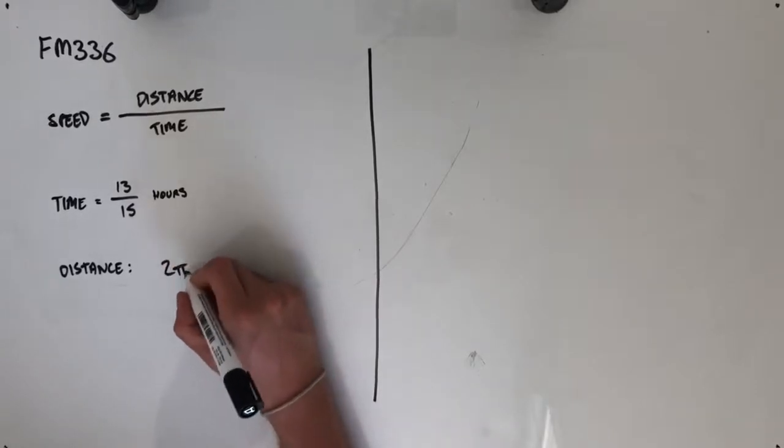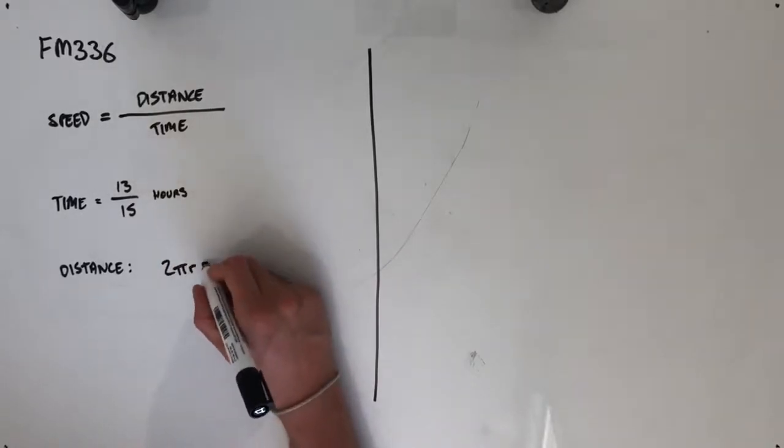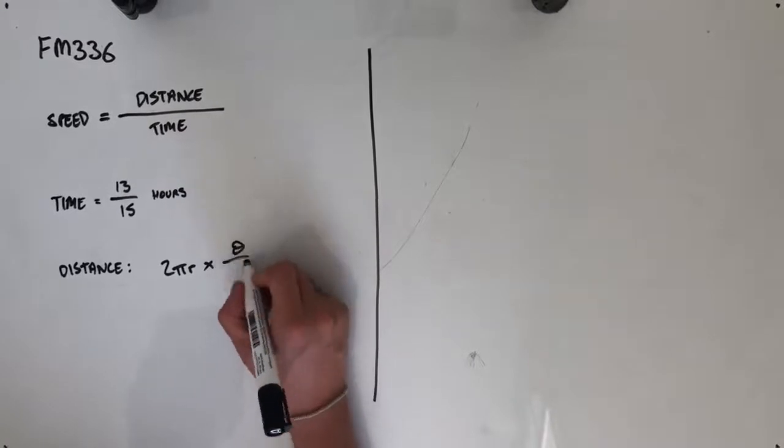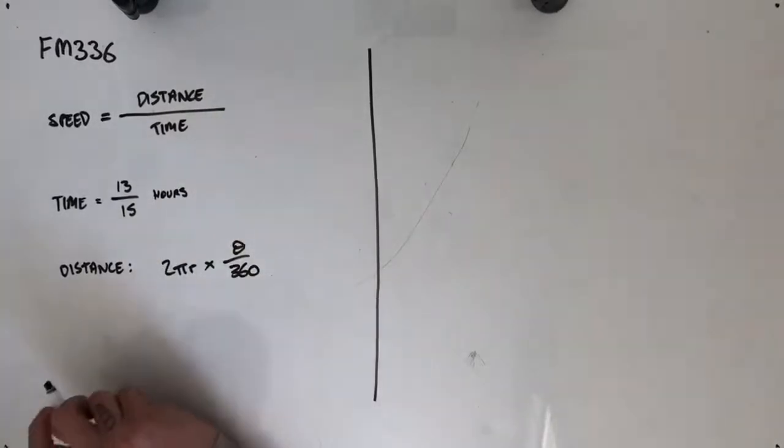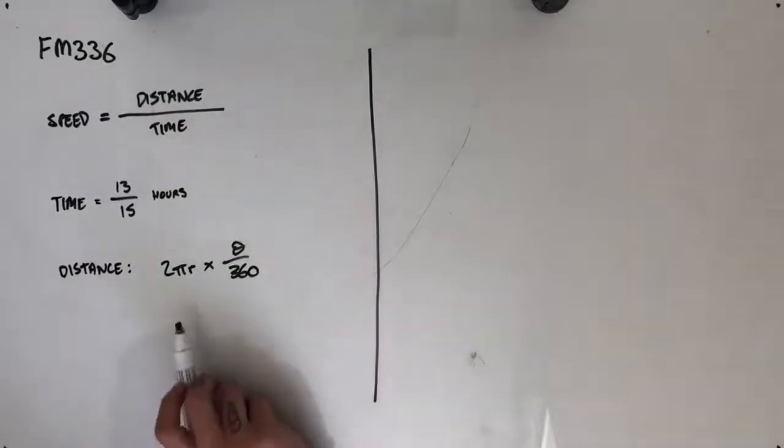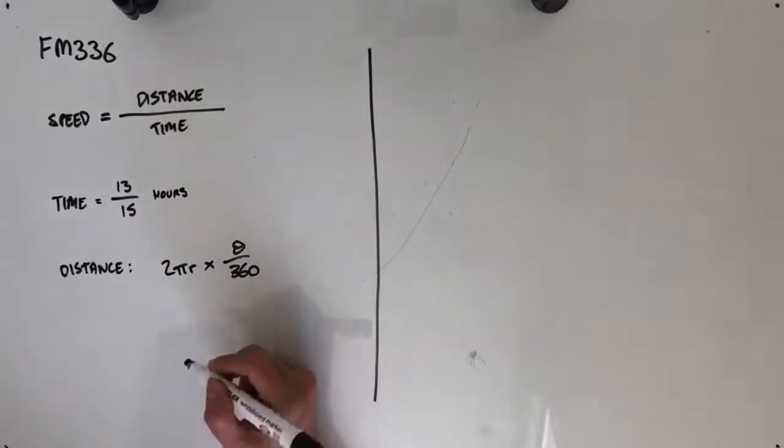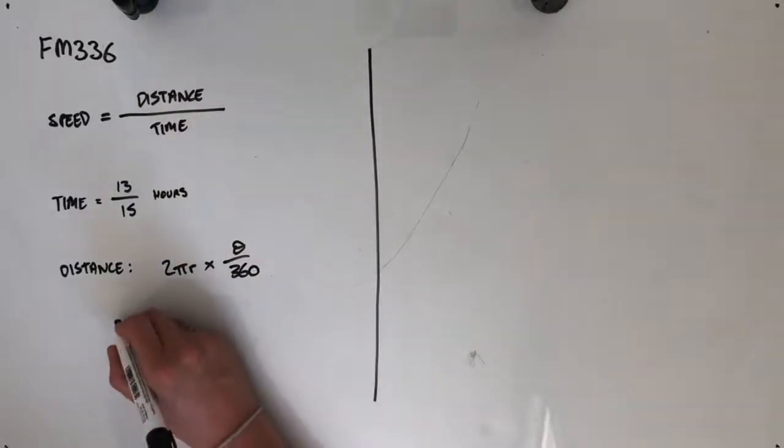I'm going to use 2 pi r times theta over 360. You might have pi r theta over 180. That's essentially the same formula. Just substituting for r and theta will give you the same answer. When we're calculating distance,